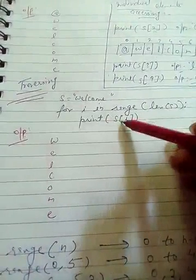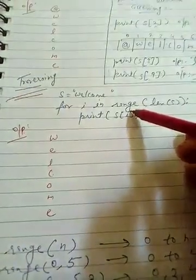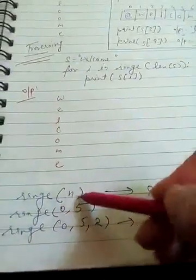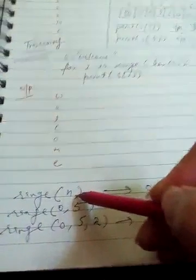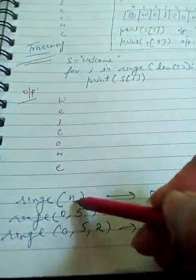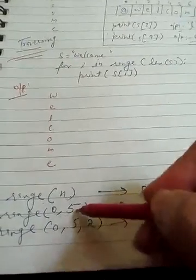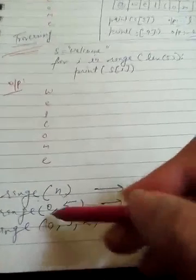As we discussed in the previous video, range is a function which returns indexing values from 0 to n minus 1, whatever maximum limit you are passing. So range(n) gives 0 to n-1. The second variation is range(0, 5), meaning its initial value is 0 and the last value would be 4.